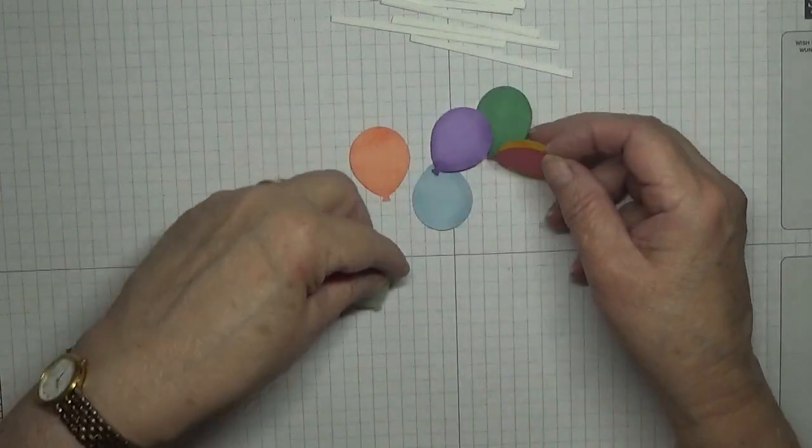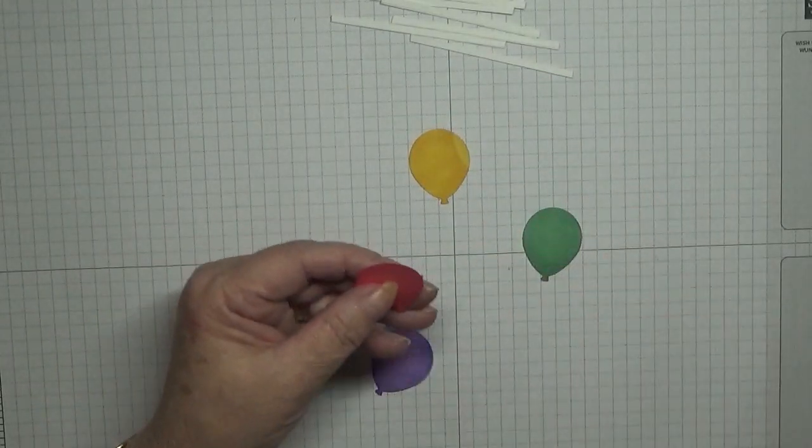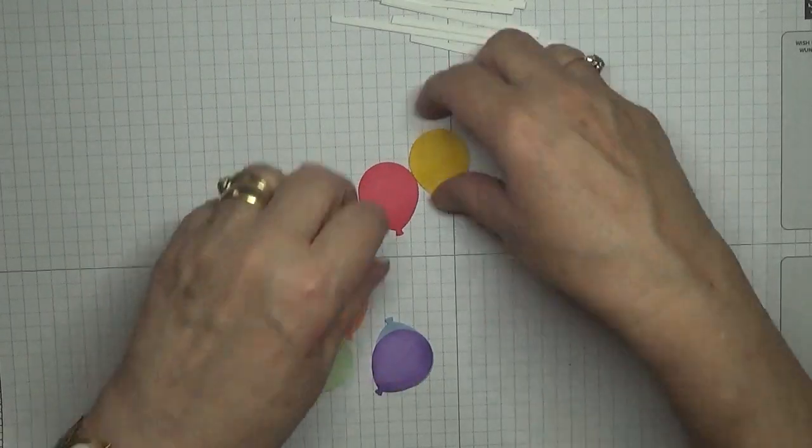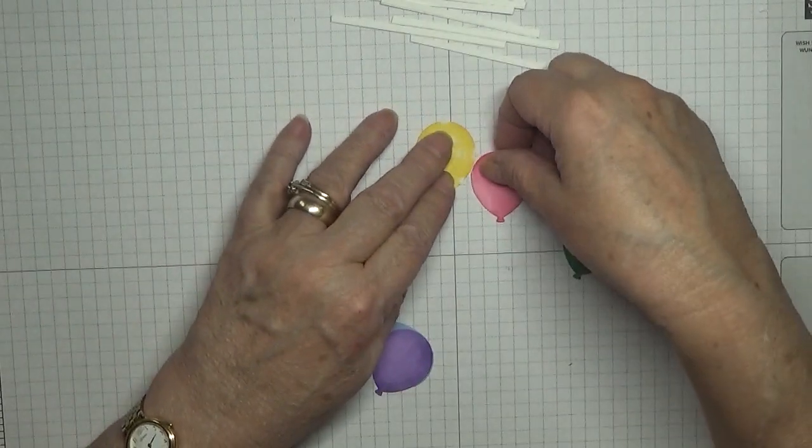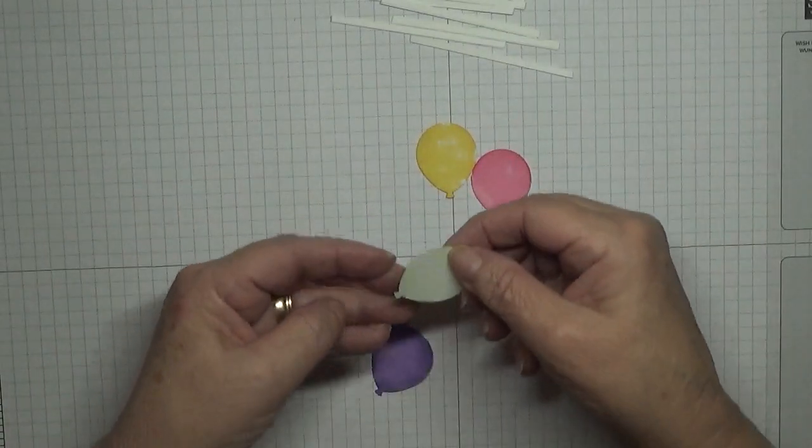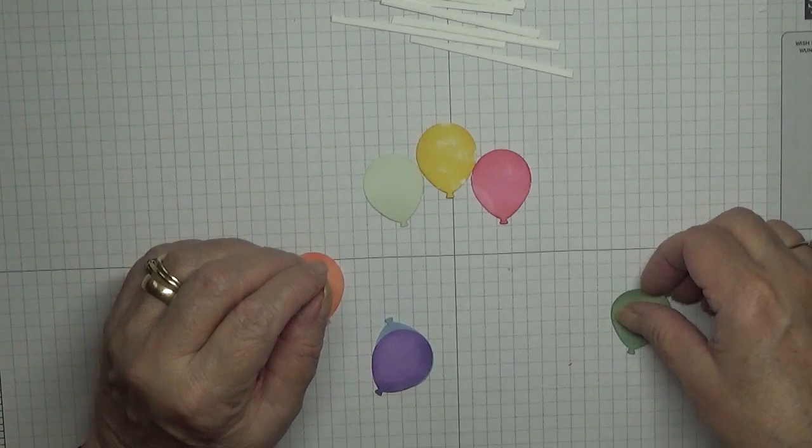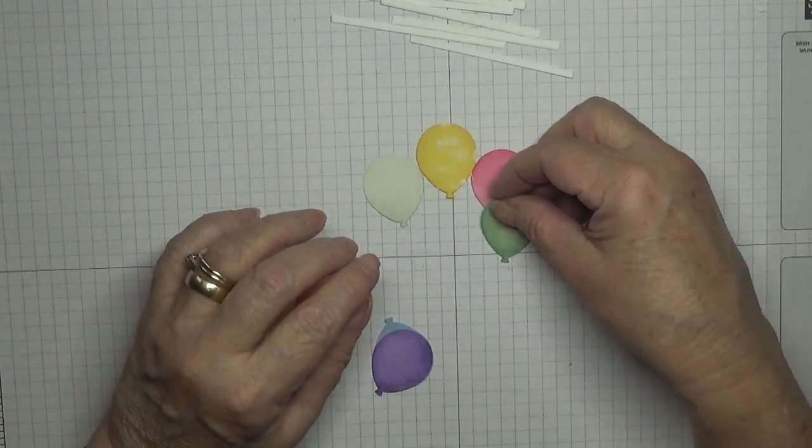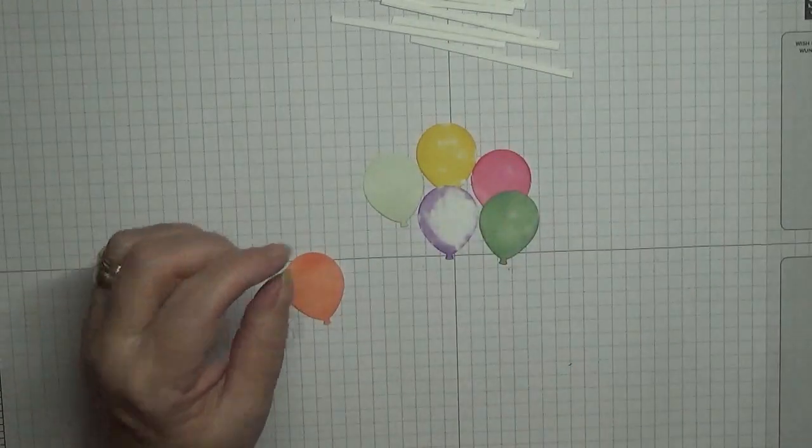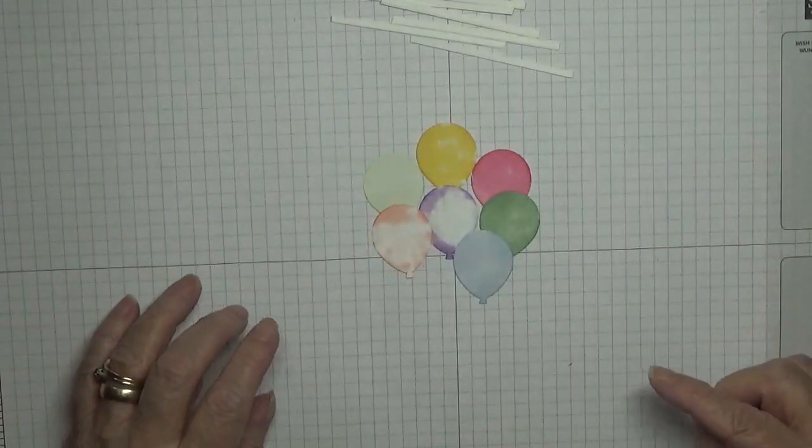All right, now we're going to lay them out the way we want them. So I'm going to have the yellow one up there and I'm going to have the pink one, which I just need to trim that bit off. Just touching it, I need to do it this way. And then the Soft Sea Foam there. And then we're going to have the green Just Jade touching that. Highland Heather just touching that. And the pink and the blue. So that is the way we're going to have them.